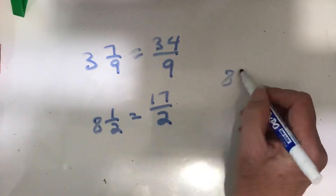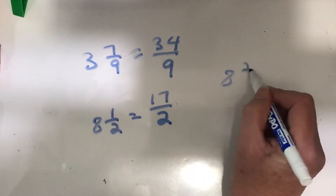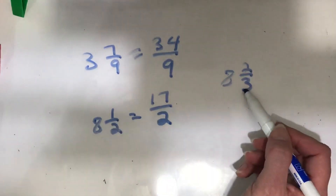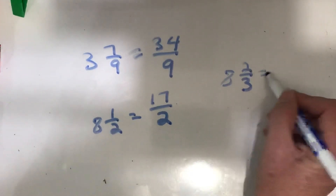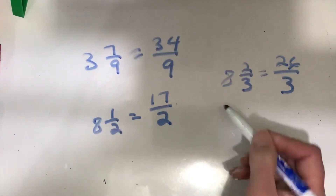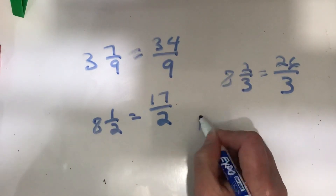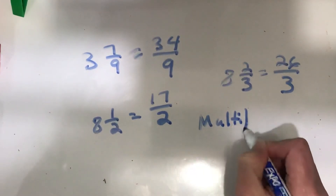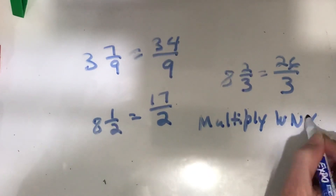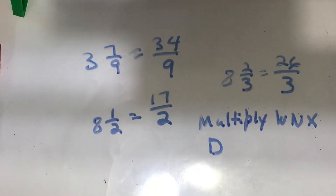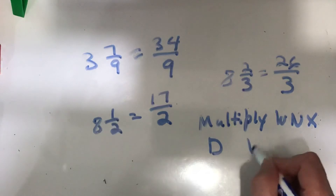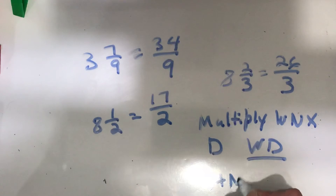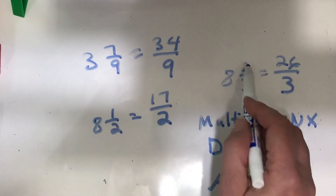So if I have eight and two-thirds, each whole is going to have three-thirds, so eight times three is twenty-four thirds, plus two more would make twenty-six thirds. So you multiply your whole number times the denominator — you can think of that as the WD step: whole number times the denominator. And then you add your numerator. Whole number times denominator, add numerator.